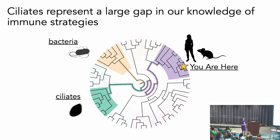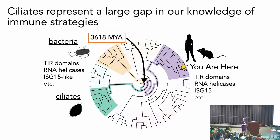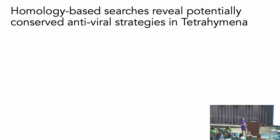Despite the large evolutionary distance between, say, humans and bacteria, there are actually quite a few similarities too. For example, bacteria also use TIR domains to communicate the signaling cascades following an immune response. We know that bacteria and mammals use these RNA helicases, and there was a recent discovery of an ISG15-like response in bacteria — ISG15 being an interferon-stimulated gene — and we know that a lot of chordates use ISG15. So I'm also interested in finding some similarities here. I've started with a computational approach: you take domains from known immune effectors, create a profile, and use homology-based searches to find anything similar in the genome or proteome, and now thanks to AlphaFold you can do this with structures as well.